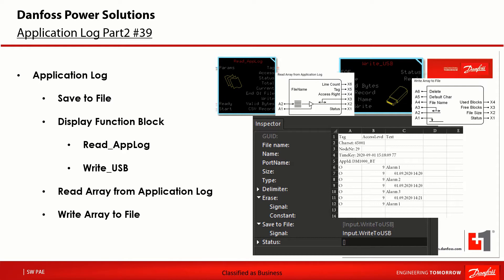In the following minutes I would like to show how to write the application log records to a USB memory stick connected to the controller. Starting with the save to file functionality inside the application log editor, you can easily set up your application log settings with just a few mouse clicks to save the application log on a USB stick in CSV file format. This is followed by the display library and two available display function blocks: read app log and write USB. And last but not least, the array components read array from application log and write array to file, which can be used to read out the application log info in an array including all the characters of the log data.